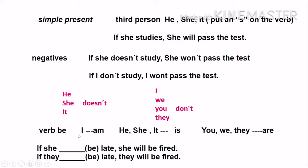Another thing is the verb 'to be'. Remember: I am, he/she/it is, you/we/they are. So in a conditional with simple present, if I have 'be' with 'she', I cannot say 'if she be late' — she goes with 'is'. So: if she is late, she will be fired. If they are late, they will be fired. When using the verb 'be', remember: 'I' goes with 'am', he/she/it with 'is', and you/we/they with 'are'. This is in simple present. In past, the verb 'to be' is 'was' and 'were'.